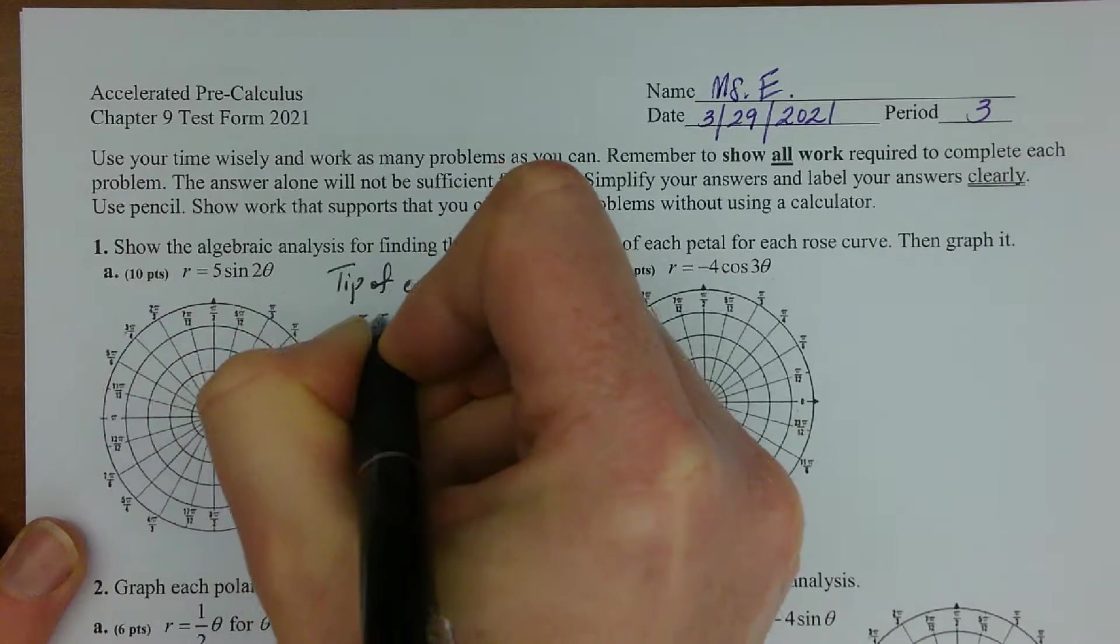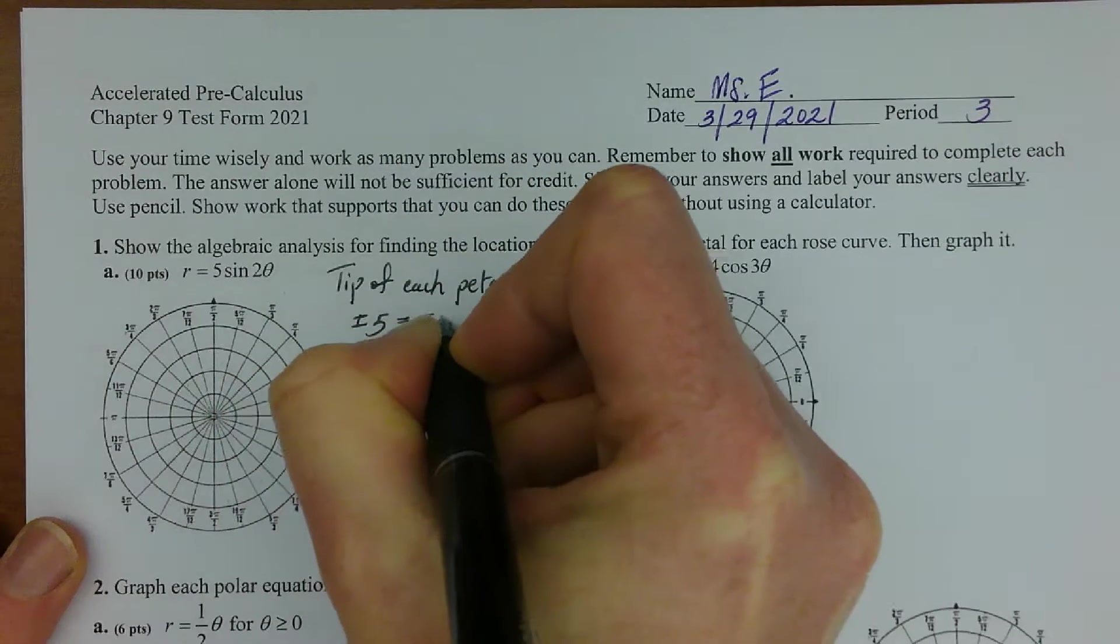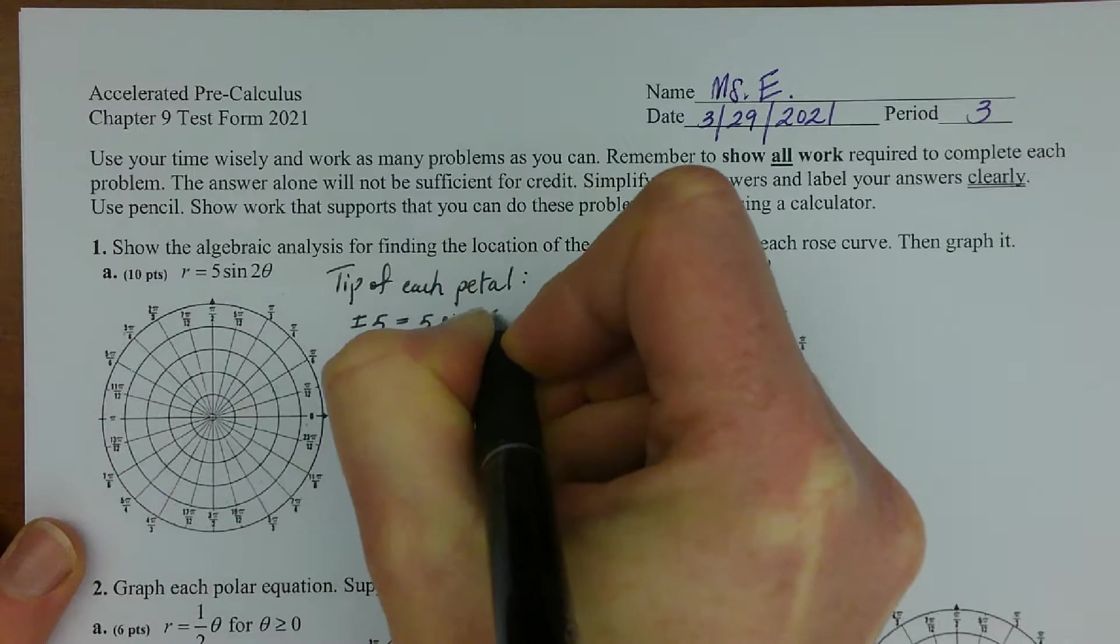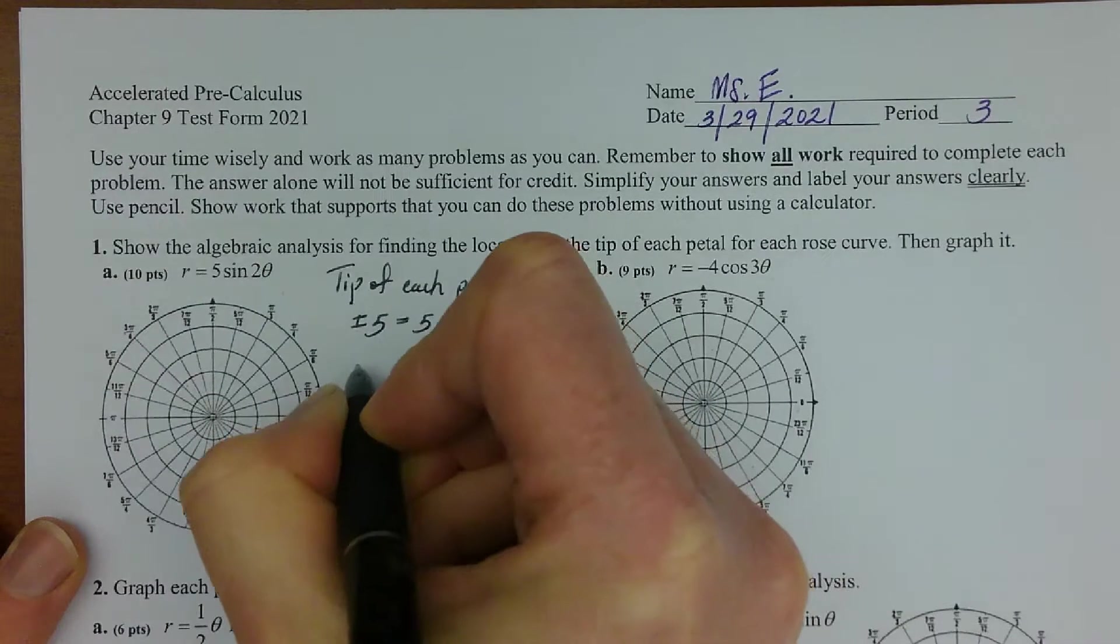So since the maximum value is five, we'll just go ahead and put plus or minus five in for r and then solve for theta.